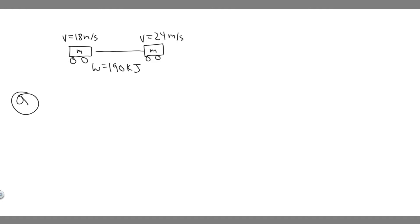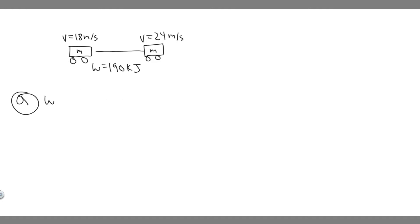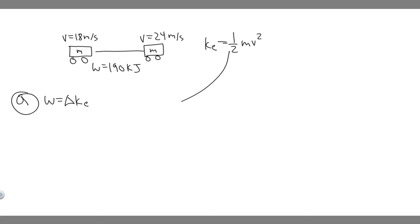For Part A, we're trying to find the mass of the car. The way we're going to do this is by relating work to kinetic energy. We know work is equal to the change in kinetic energy. You also need to know the formula for kinetic energy, which is KE equals one-half mv squared. So work equals the change in kinetic energy, which is the final kinetic energy minus the initial — that is, one-half mv_final squared minus one-half mv_initial squared.